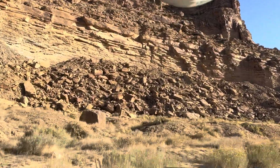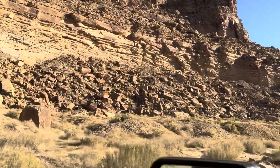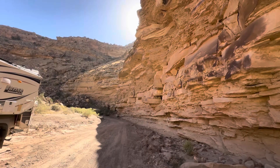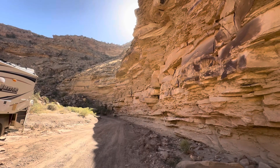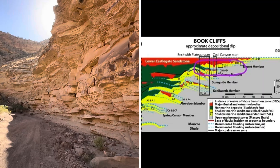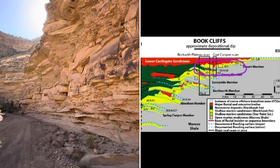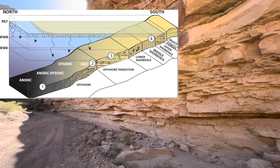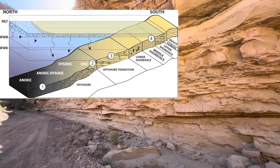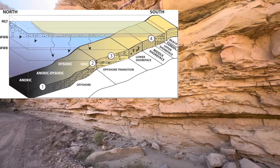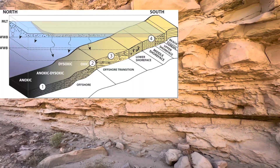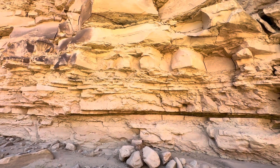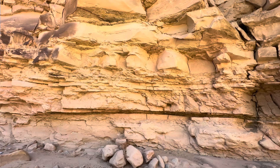Let's go ahead and start taking a look at some rocks. This outcrop is part of what's called the Grassy Member of the Mesa Verde Group, and it's a lower to middle shore face succession. Like all shore faces, it's recording higher energy and shallower water depth as you go upward in the succession over time.